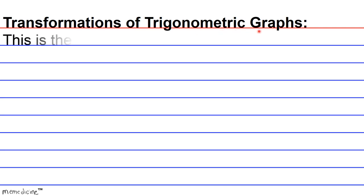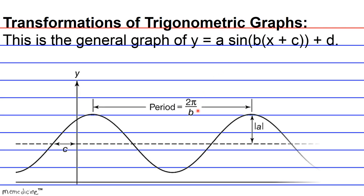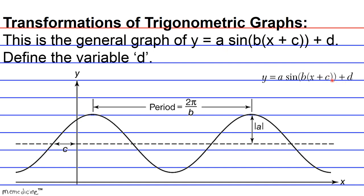Transformations of trigonometric graphs. This is the general graph of y equals a sine of b times x plus c plus d. Define the variable d. Press pause if you need to and I'll give you a brief moment to think.